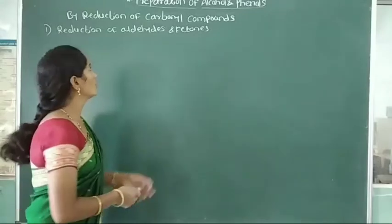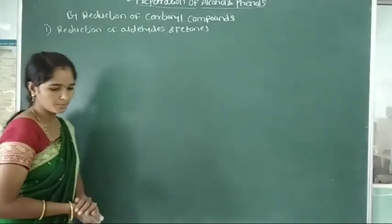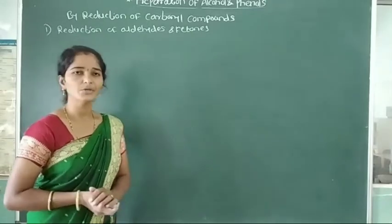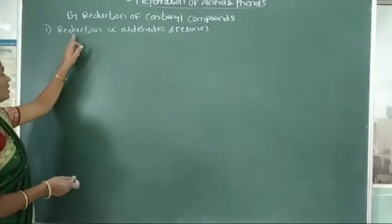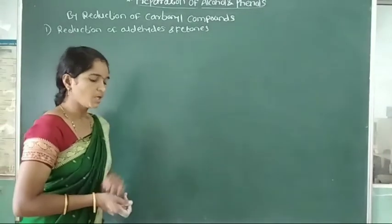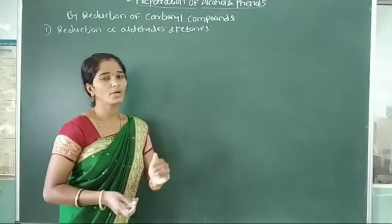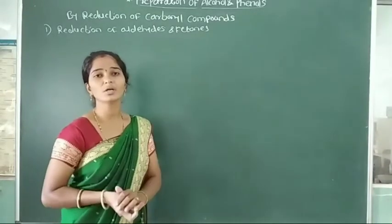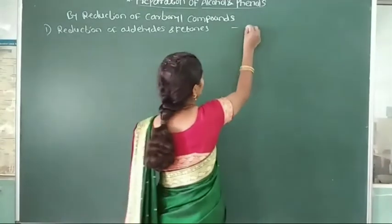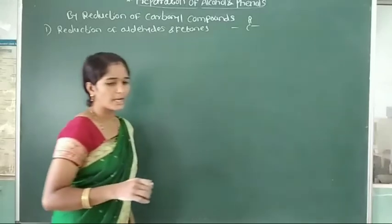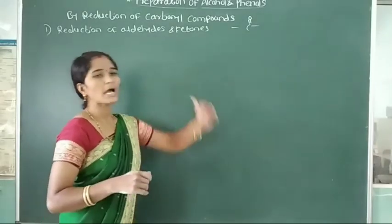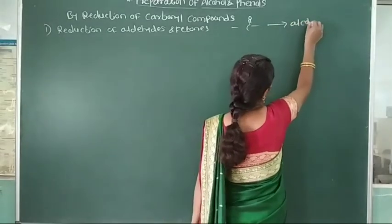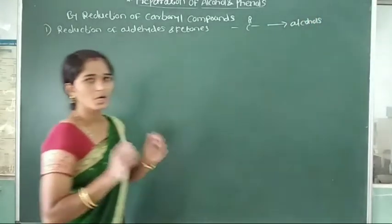Next method: preparation of alcohol by reduction of carbonyl compounds. Carbonyl compounds contain aldehyde, ketone, acyl, and ester. We will see first that alcohol is prepared by reduction of aldehyde and ketone. These aldehyde and ketone are organic carbonyl compounds which contain carbonyl group. After reduction of this carbonyl group, it gives us alcohols.